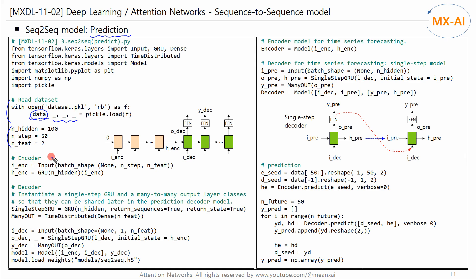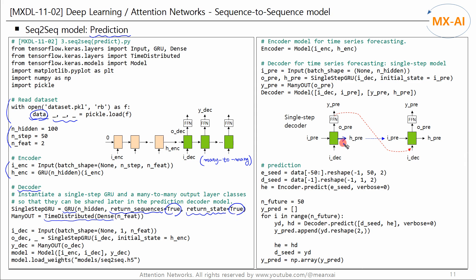Now let's build a model for prediction. We create an encoder just like in the previous code, and we create a decoder. The decoder differs from the previous code in that no teacher-forcing is used in the prediction stage. We instantiate a single-step GRU and a many-to-many output layer class so that they can be shared later in the prediction decoder model. Since the decoder is many-to-many, we set the return sequences argument of GRU to true, and we also set the return state argument to true to output the last hidden state separately from the output of each time step.